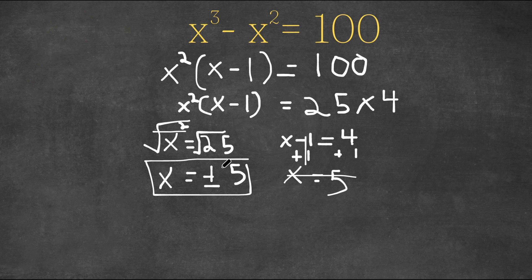Now, why don't we plug these two into our equation and see if they are right. Let's first start with 5. So we would have 5 to the power of 3 minus 5 squared equals 100.